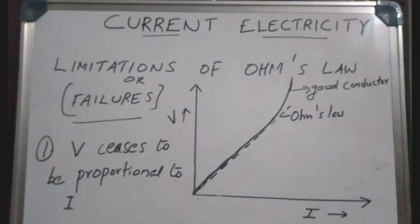When the graph deviates from the straight line, this means that Ohm's Law is a failure. In a good conductor case, the voltage is proportional to the current.